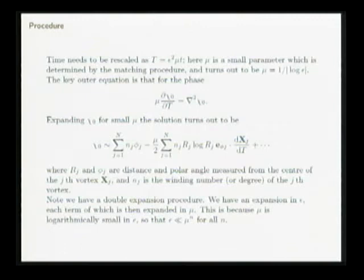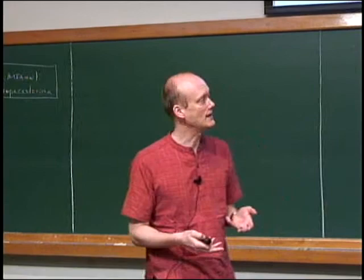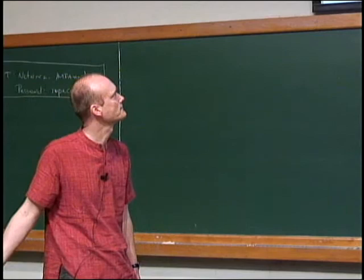This double expansion procedure and the logarithmic dependence of mu on epsilon is useful in that it allows you to solve the equation through an expansion, but matching log terms is typically very complicated. Whenever you do matched asymptotic expansions with log terms, you really have to match all the log terms at the same time — you can't match them one after the other. This is possible here but becomes much harder when q is non-zero.